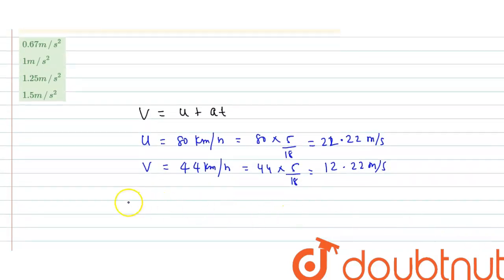Now put these values in equation. V equals 12.22 equals initial velocity 22.22 plus acceleration into time 15 second.